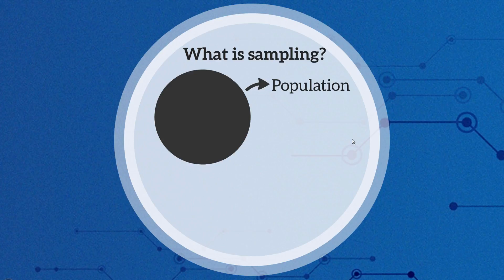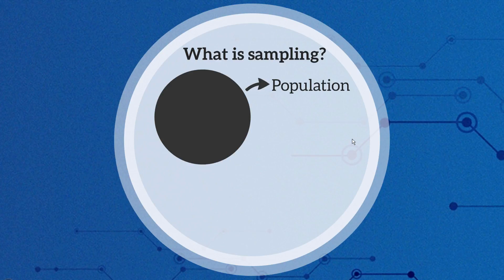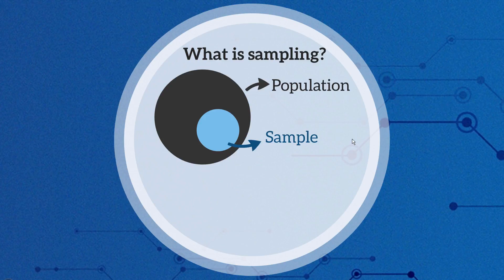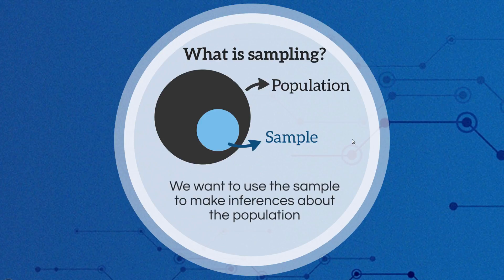So what is sampling? With any measurement we want to take — let's say blood pressure — there's a population relevant to those measurements, maybe people with hepatitis C. We can't collect everybody with hepatitis C and calculate their blood pressure, so instead we take a small sample. It's usually impossible to get information on the whole population, so we use the sample to make inferences about the population. This is the crux of statistical inference.